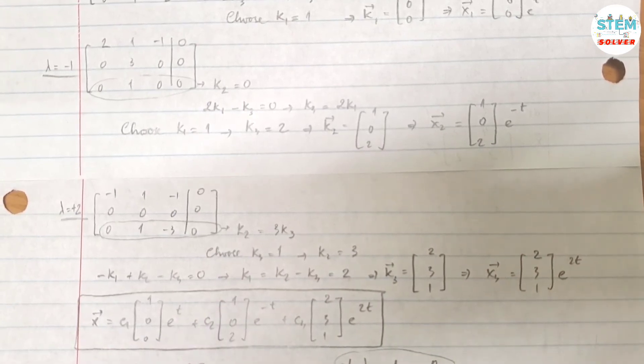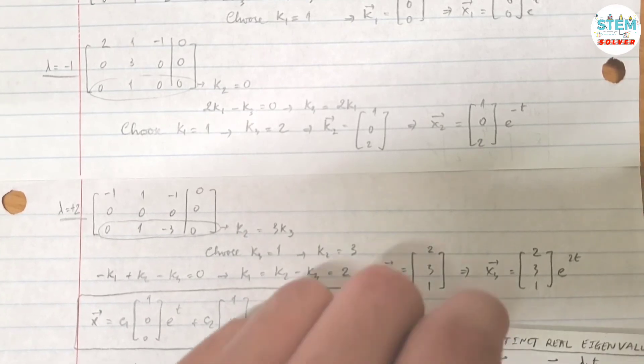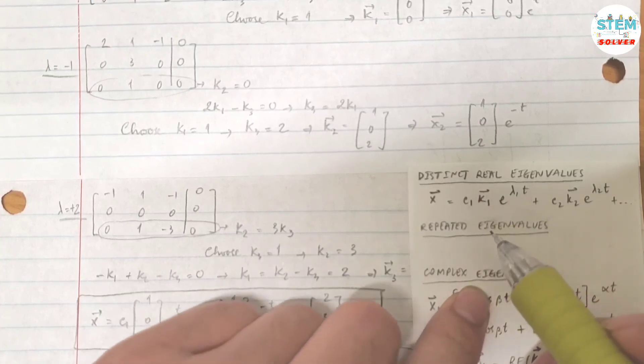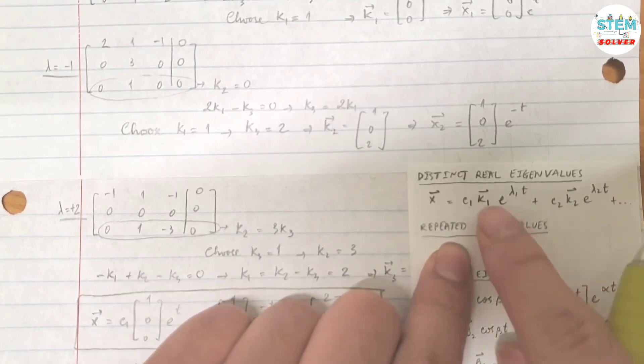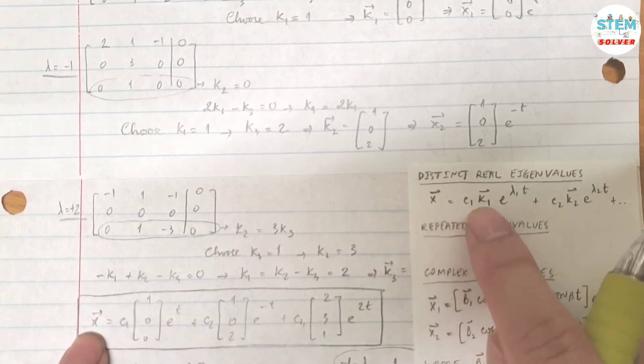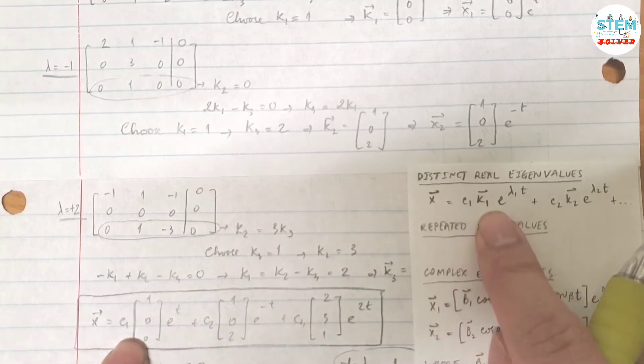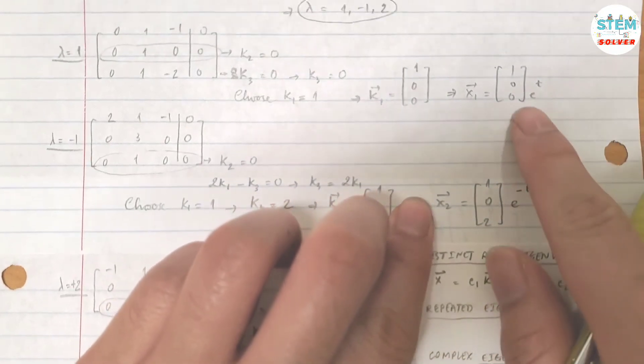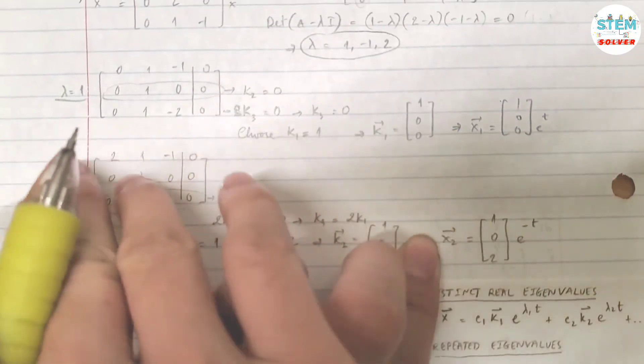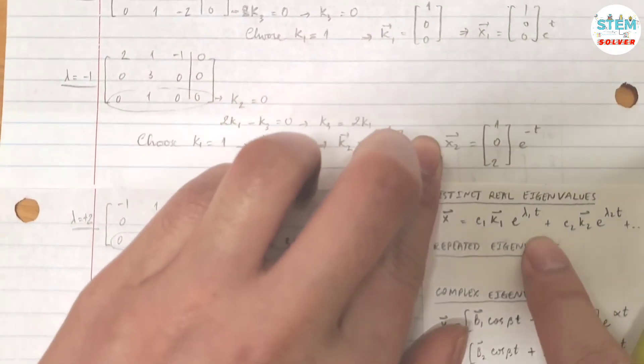Now here's the most important step, which is writing your final solution. Because you have 3 distinct real eigenvalues, your final solution will be written in this form. Vector x equals c1 times k1, which is this, 1, 0, 0, then times e to the lambda 1t. Your lambda 1 is 1, so you have e to the t.